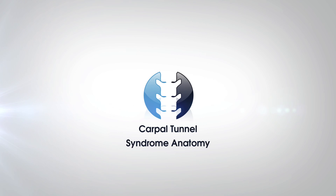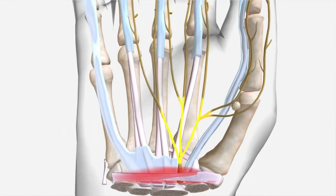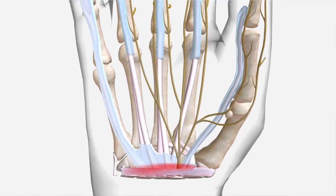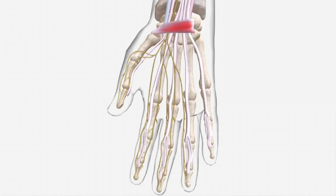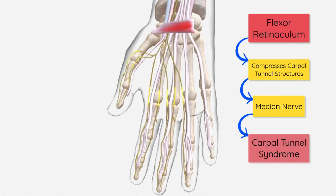First, carpal tunnel syndrome. This is a compression of the median nerve in the anterior wrist. The median nerve travels through a small area in the front of the wrist called the carpal tunnel. Over the top of the carpal tunnel is a roof or sheath of soft tissue called the flexor retinaculum, which is there to protect the structures underneath it. However, when that tissue gets irritated, it can compress down on that median nerve, giving symptoms of carpal tunnel syndrome.